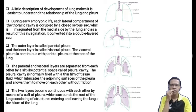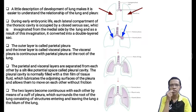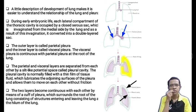A little description of the development of the lung will make it easier to understand the relationship of the lung and the pleura. During early embryonic life, each lateral compartment of the thoracic cavity is occupied by a closed serous sac which is invaginated from the medial side by the lung. As a result of this invagination, it is converted into a double-layered serous sac. The outer layer is called the parietal pleura and the inner layer is called the visceral pleura. The visceral pleura is continuous with the parietal pleura at the root of the lung.